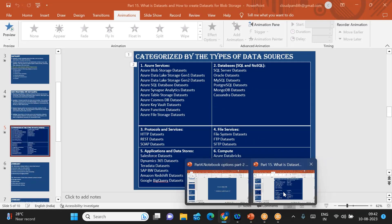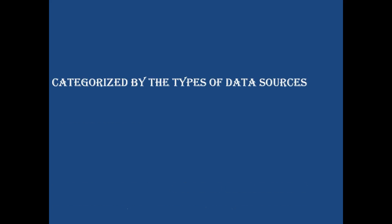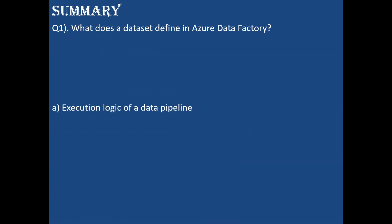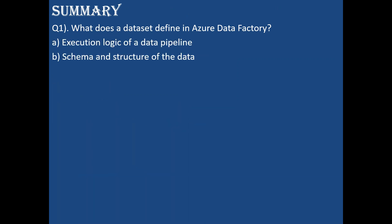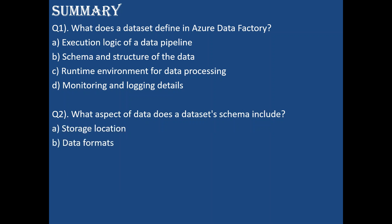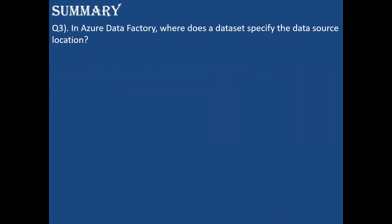Let's go through some questions to summarize today's session. Question 1: What does the dataset define in Azure Data Factory? Options: logic for data pipeline, schema and structure of the data, runtime environment, or monitoring and logging. The answer is B — schema and structure of the data, which we define within the dataset. Question 2: What aspect of data does the dataset schema include — storage location, data formats, or data types and columns? The answer is C — the schema includes data types and columns.